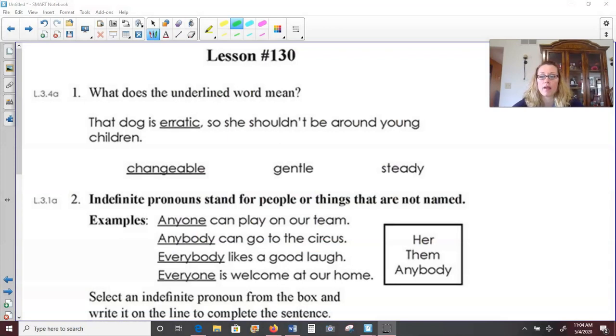Take a look at number one. What does the underlined word mean? That dog is erratic. So she shouldn't be around young children. What does that mean? Well, if she shouldn't be around young children, that probably doesn't mean she's gentle. And steady, you know, kind of means calm. That doesn't sound like this dog. Changeable, though, if this dog is changeable, that means her mood could change. She could be nice one moment and then get kind of mean the next. That would be erratic. So I think those two words are closely connected.